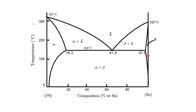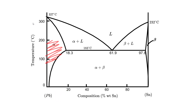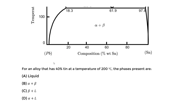The beta phase is very tin-rich, containing a lot of tin. As we go to the left, that side becomes lead-rich, so the alpha phase is lead-rich.